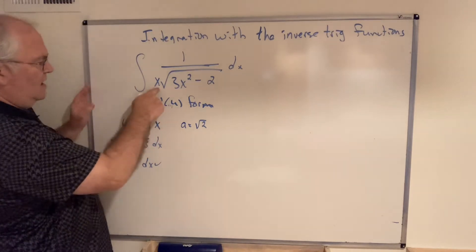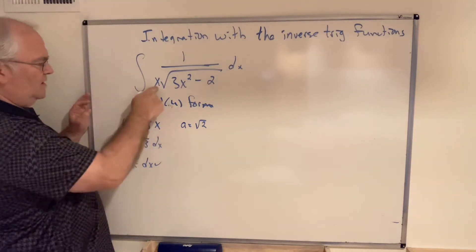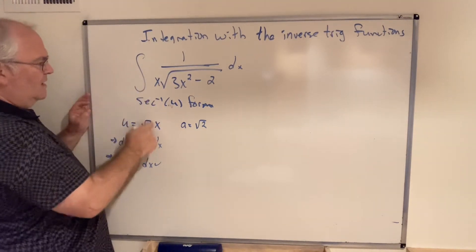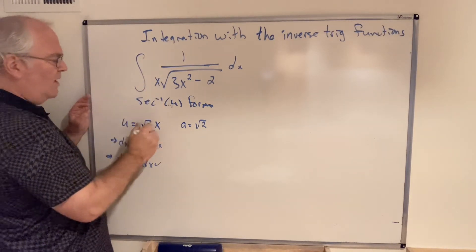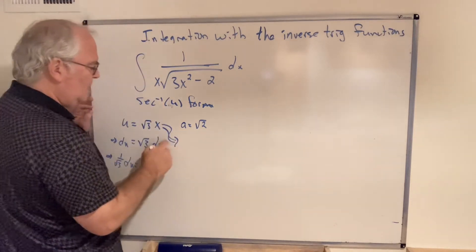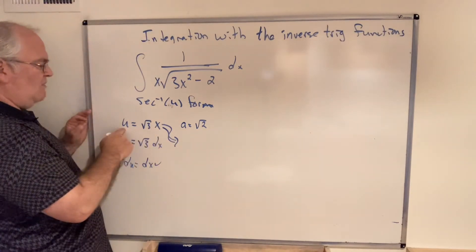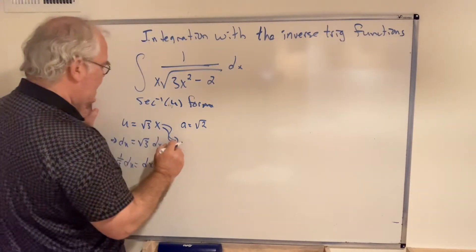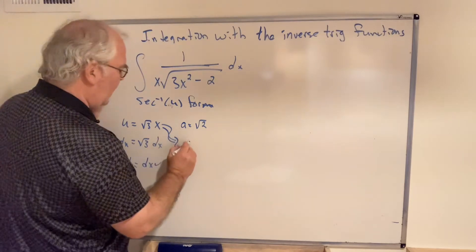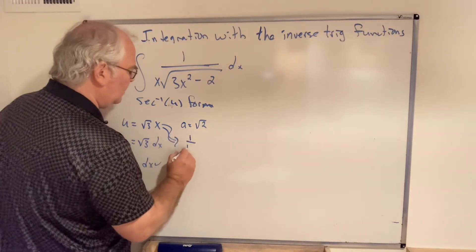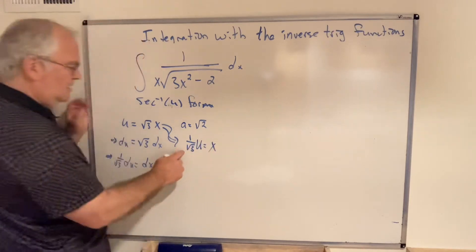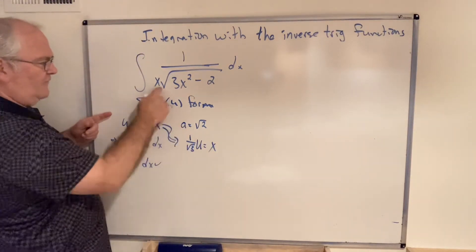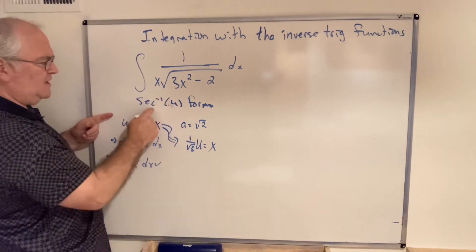Ah, it's not quite exact. Look, because we have x. We have x. This is similar to the double linear scenario. What is x equal to? x is equal to—divide both sides by √3. And so we have 1 over √3 times u is equal to x, right? We have to solve for value for x. So it's an extra little quirk with this secant inverse form.